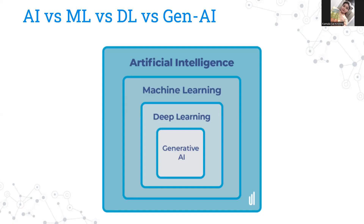Let me explain the AI ecosystem briefly. Artificial intelligence — the short form is AI. In the year 1956, which is generally called the birth year of AI — and I remember that year because it's also my father's birth year — a landmark event took place.